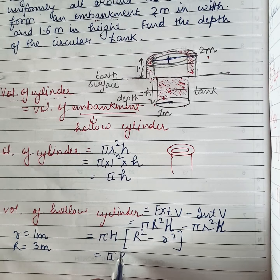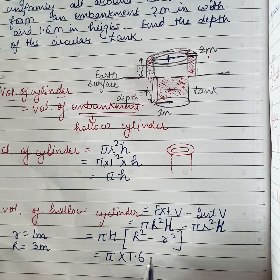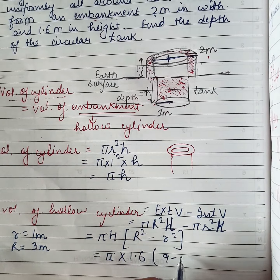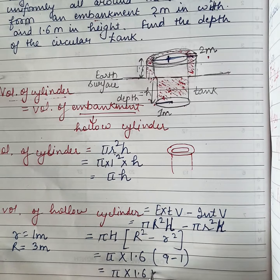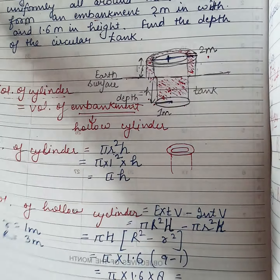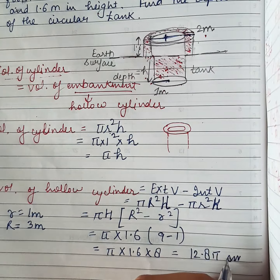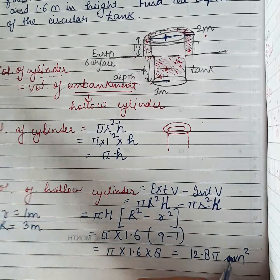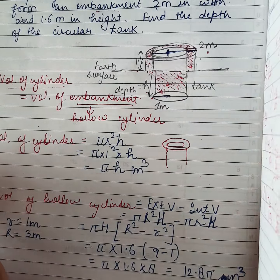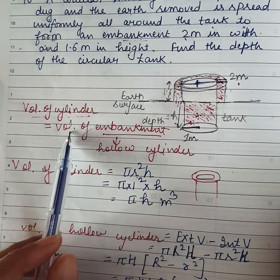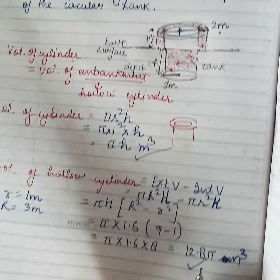So: pi into 1.6 into (R squared minus r squared) = pi into 1.6 into (9 minus 1) = pi into 1.6 into 8 = 12.8 pi meter cube. This is the volume of the embankment. Here also, meter cube. Now, in the beginning we established that volume of cylinder equals volume of embankment, so we have both volumes — let us equate them.